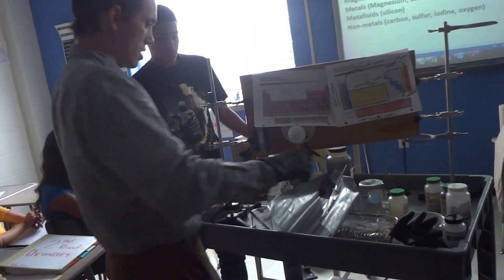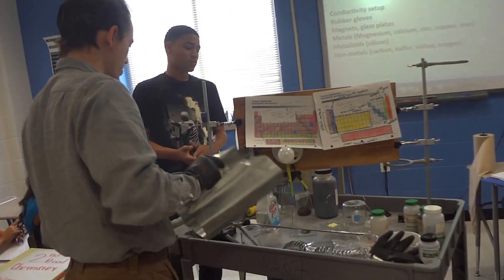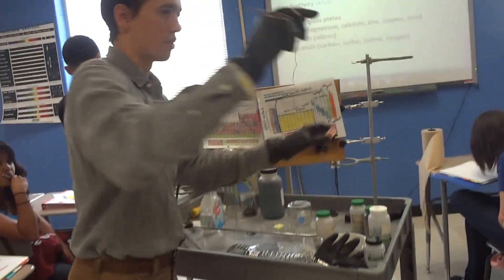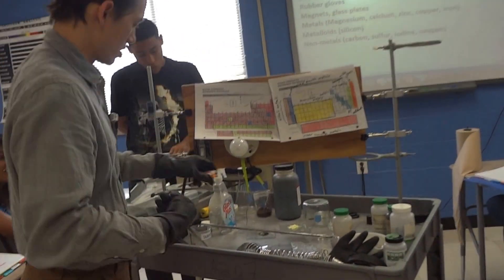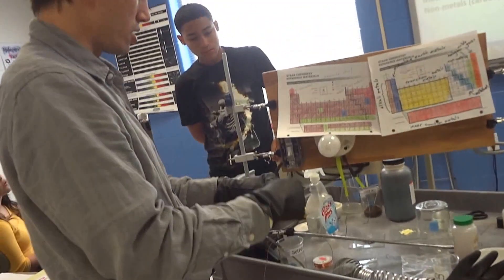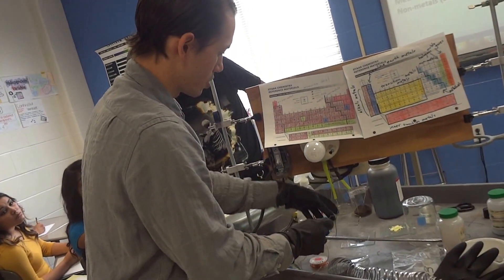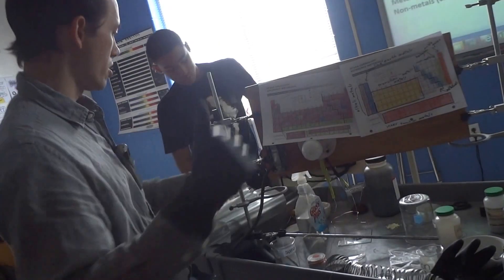We have one more metal to test, and that is copper. What do we use copper for? Let's take a look at copper and write down the physical properties. It's ductile — it can be made into a wire. It's also malleable and shiny. Now we're going to test for conductivity to confirm our hypothesis.